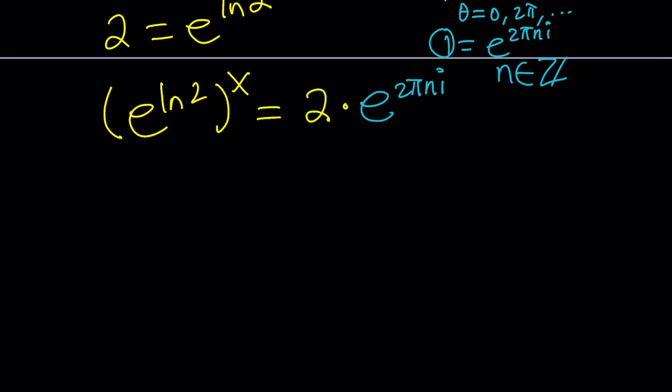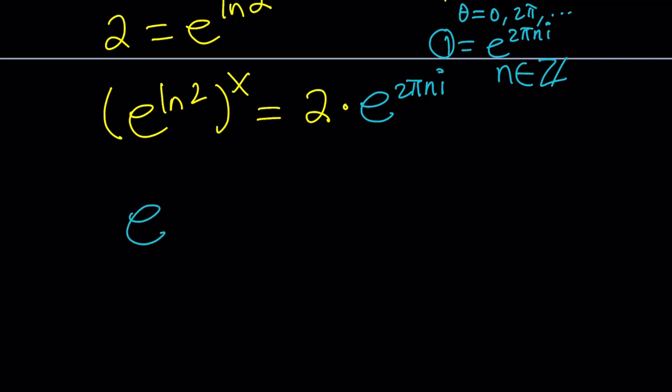Now, we're going to go ahead and multiply the exponents here. e to the power x ln2. We've got to be a little careful, because this doesn't always work. So a to the power b to the power c is not always a to the power bc with complex numbers.